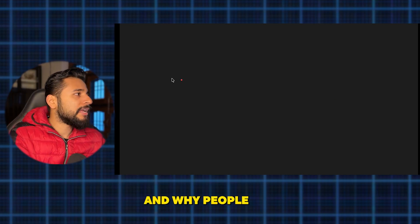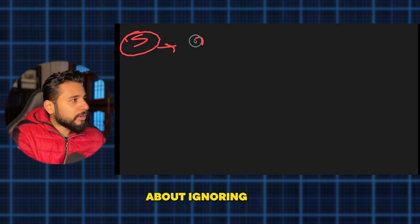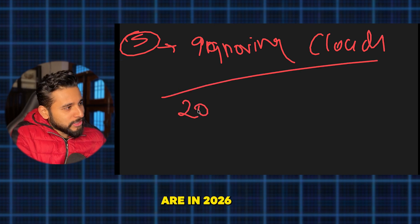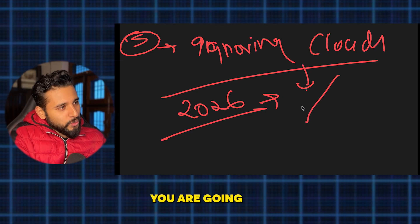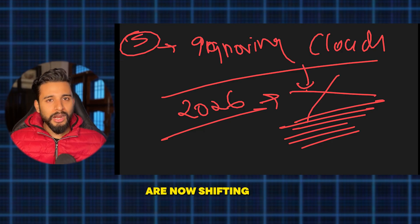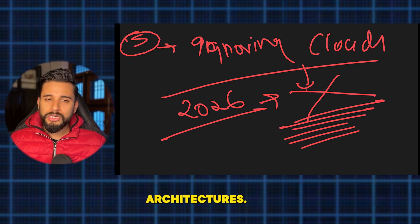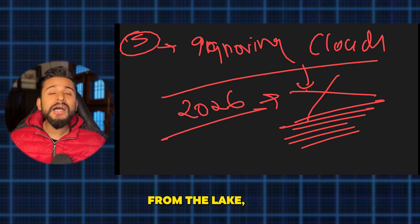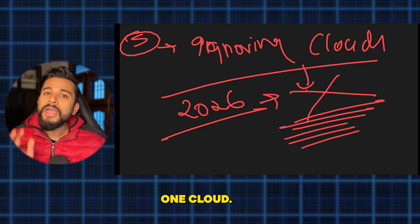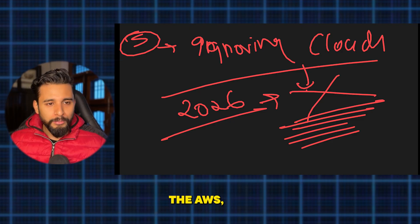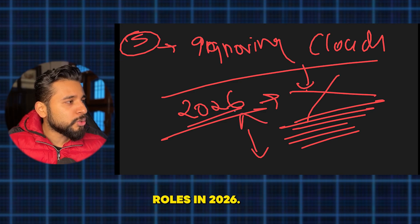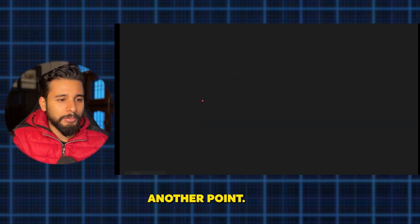The fifth mistake is ignoring cloud. In 2026, if you are ignoring cloud you will get rejected in interviews. Most companies are shifting from on-premise to cloud architectures — their warehouses and lakehouses are moving to GCP, AWS, or Azure. You should have hands-on experience with at least one cloud platform to get into data engineering roles.